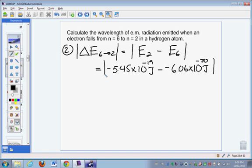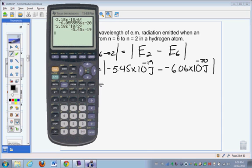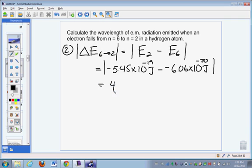And we want the absolute value of that, so we'll make the answer positive. So going back to our calculator, I've already got the negative 5.45 already entered, so I'll just type minus negative 6.06 times 10 to the minus 20 equals. And I notice the answer here is negative. It's negative because energy is actually being released, it's being lost. If the electron were jumping from level 2 up to level 6, the answer here would be positive 4.84 times 10 to the minus 19. But we're going to take the absolute value, which means we're going to ignore the negative sign in the front, and the answer will be 4.84 times 10 to the minus 19 joules. So notice, when you take the absolute value, the number negative 4.84 simply turned into positive 4.84.